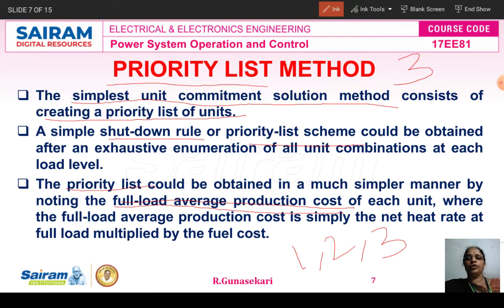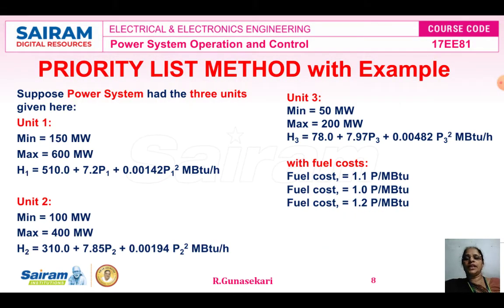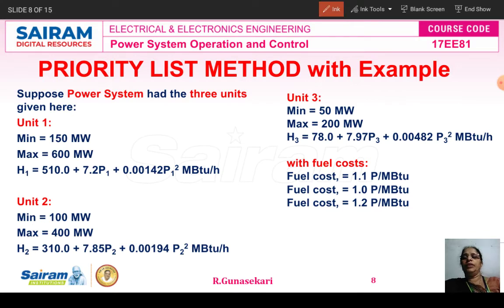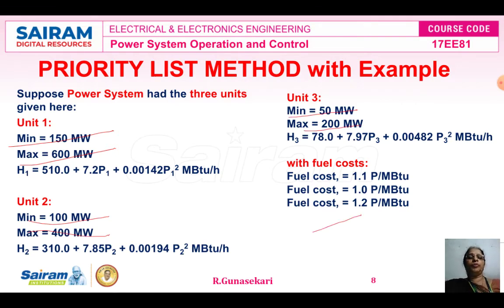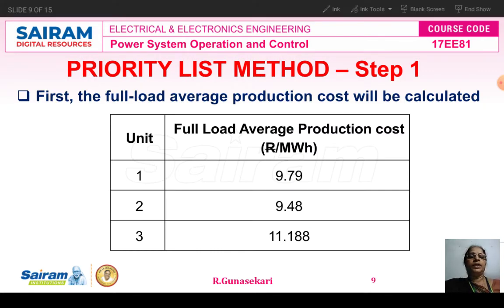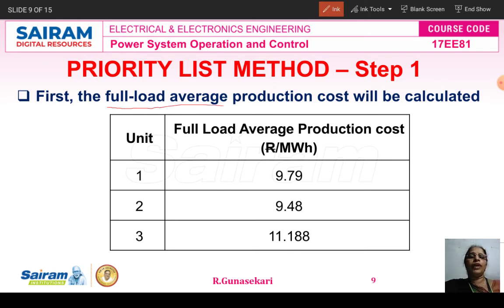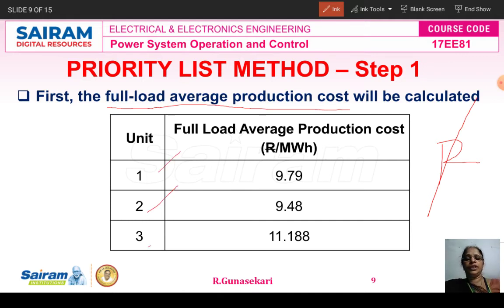What are the steps followed for the priority list method? The first step is to calculate the full load average production cost in units of $/MWh. The full load average production cost is the net heat rate at full load multiplied by the fuel cost. For unit one: 9.79, for unit two: 9.48, for unit three: 11.188. First step is complete.